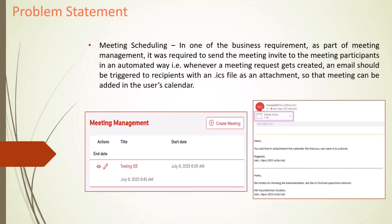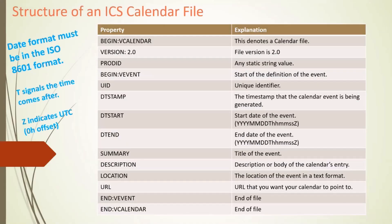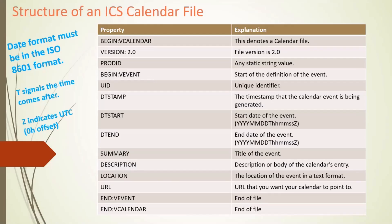Let me talk a little about the ICS calendar file and showcase some of its properties. When we talk about an ICS calendar file, it includes BEGIN:VCALENDAR, which denotes this is a calendar file, along with a VERSION property. BEGIN:VEVENT and END:VEVENT define the start and end of the event — this is the main part which defines any ICS calendar event invitation.